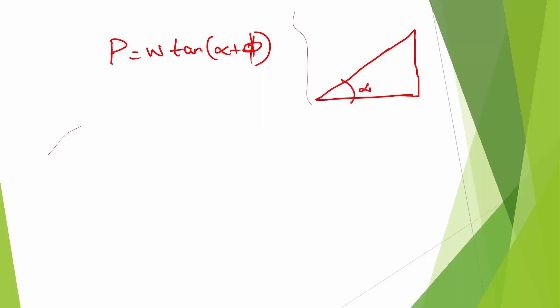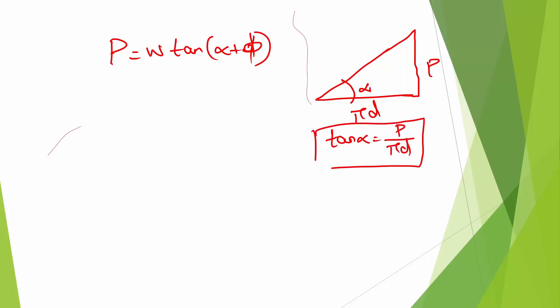The formula for helix angle: P is the pitch, and this is the circumference. So tan α = P / (π·D), which gives us α = tan⁻¹(P / π·D). That is how α is calculated.